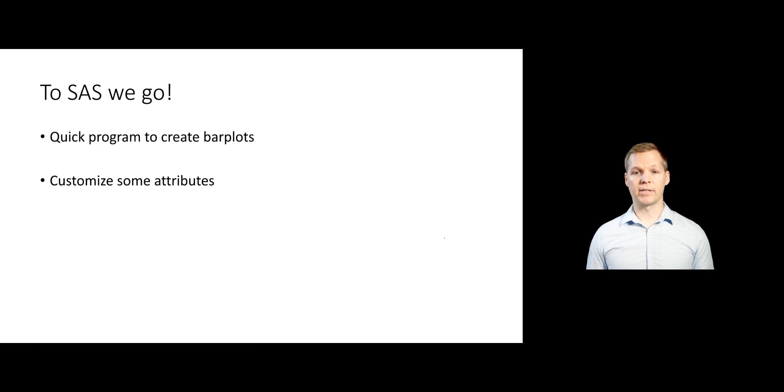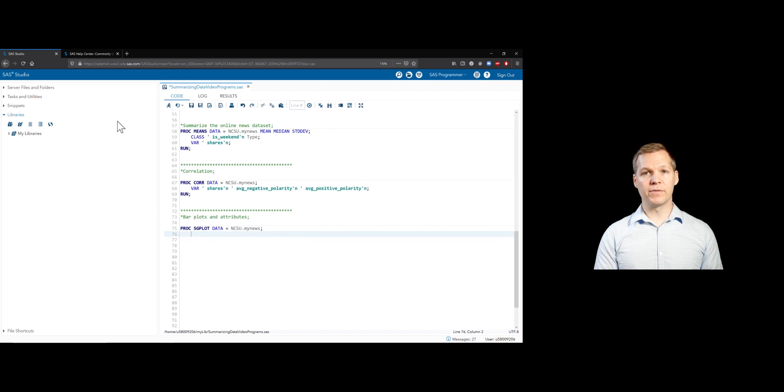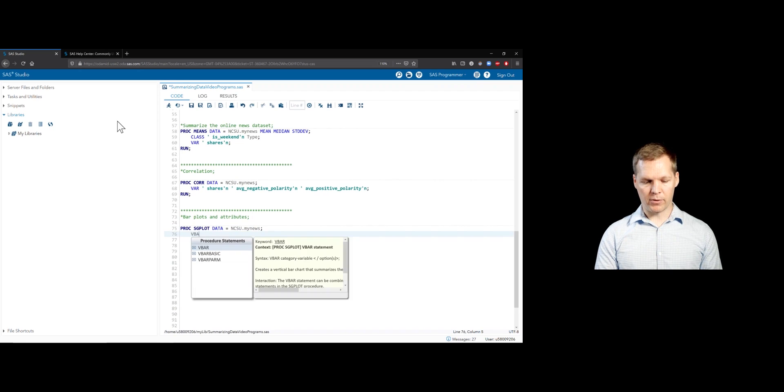Let's jump into SAS and make some of these on our own, and let's work on customizing some of those attributes that we saw on that previous page. We're into SAS here. We're going to create some bar plots and customize them. We'll use that same online news popularity data set that we created before. So we'll use PROC SGPLOT to create our plots and specify that as our data set.